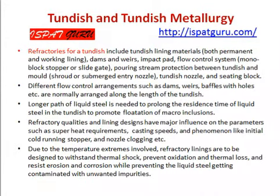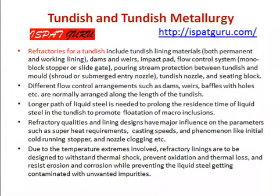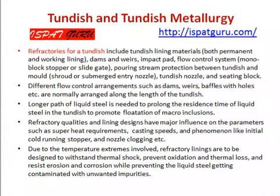The practices for a tundish include tundish lining materials — both permanent and working linings — dams, weirs, impact pads, flow control systems, monolithic stopper or slide gate, shroud or submerged entry nozzle protection between tundish and mold, submerged or semi-submerged nozzle, and stopper rod. Different flow control arrangements such as dams, weirs, and baffles with holes are normally arranged along the length of the tundish. A longer path for liquid steel is needed to prolong the residence time of liquid steel in the tundish to promote flotation of non-metallic inclusions.